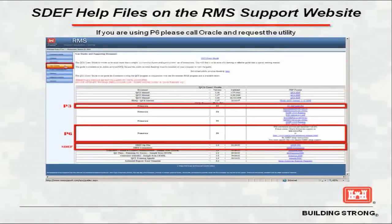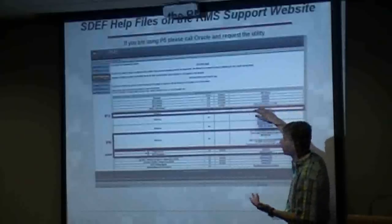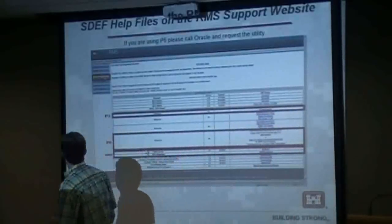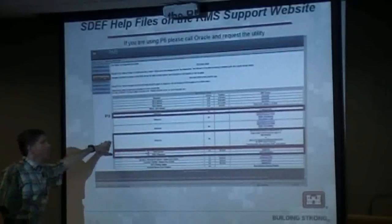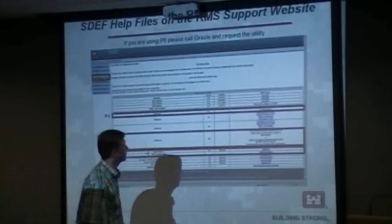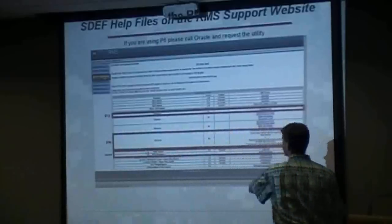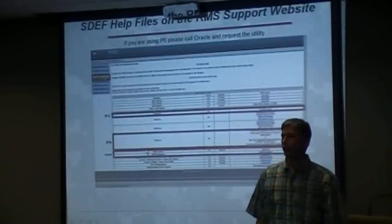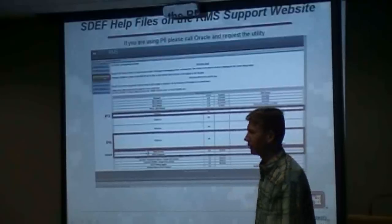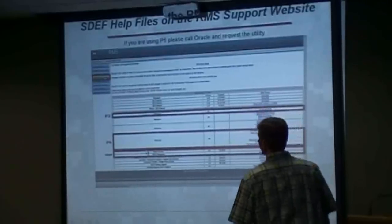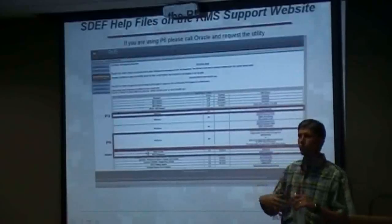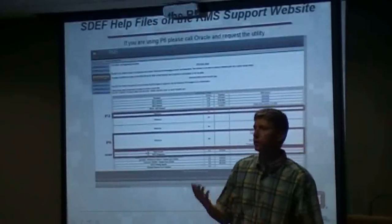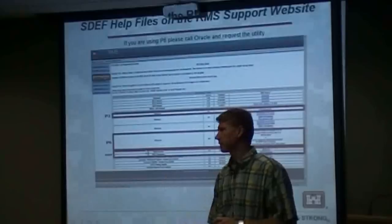Back to the RMS website — here's information about P3, and they have some utility stuff you can look at. We're under user guides again, and here's that Excel template we were at before. Here's the P6 information — it says right here, for SDF contact Oracle. Good luck getting hold of those guys, but you have to contact Oracle for that. And here's some additional SDF utility examples.